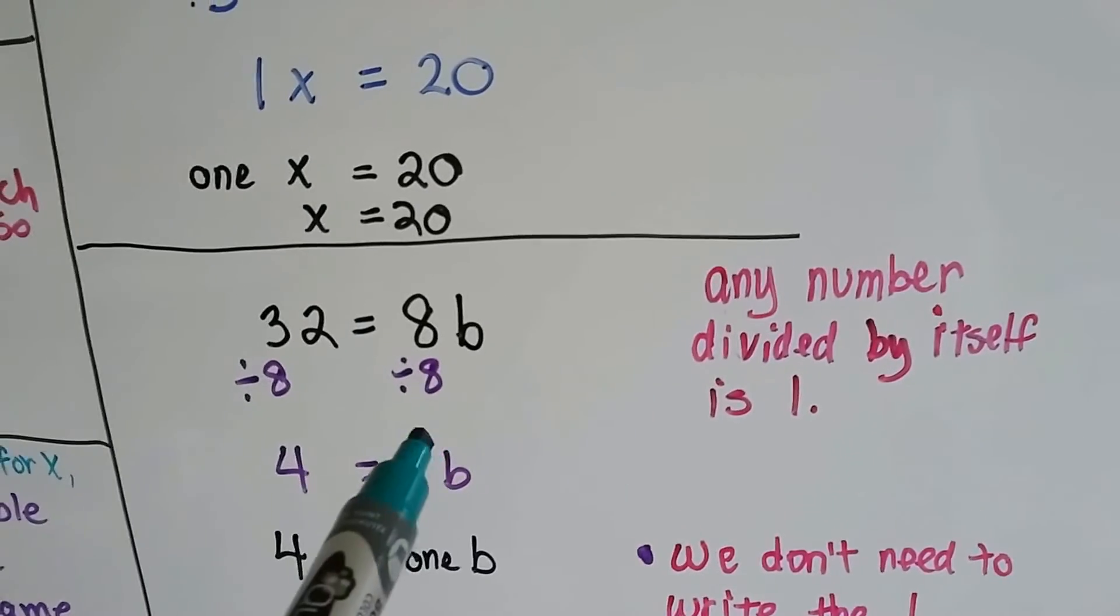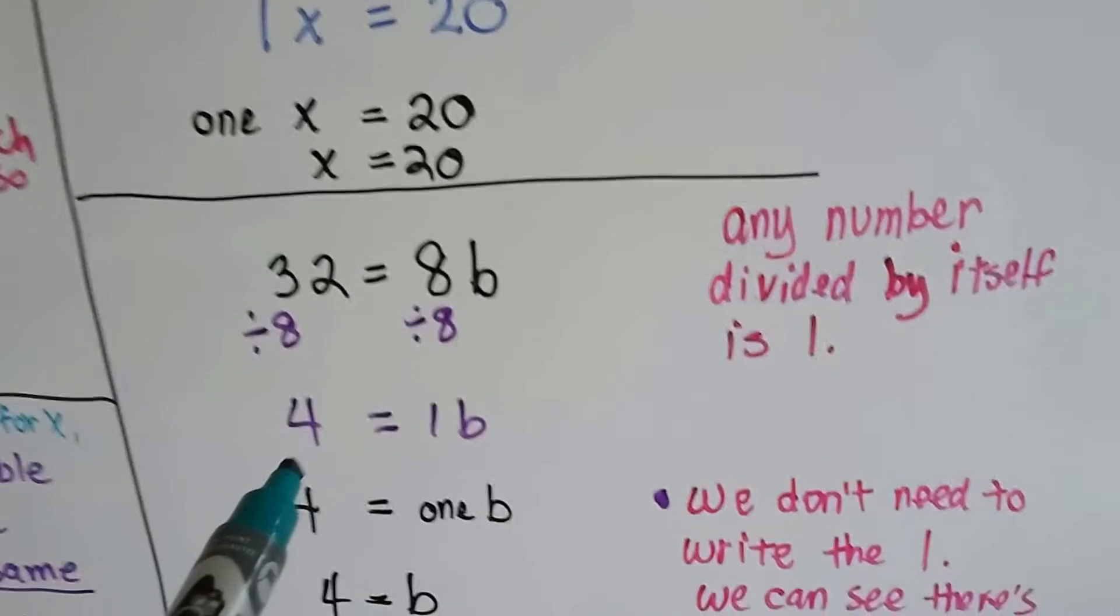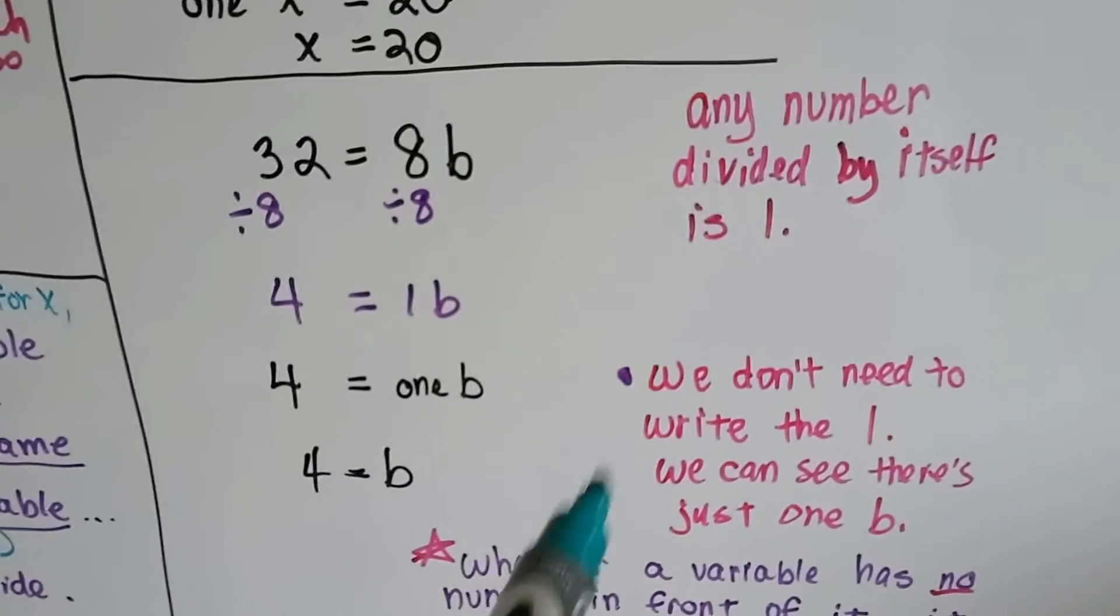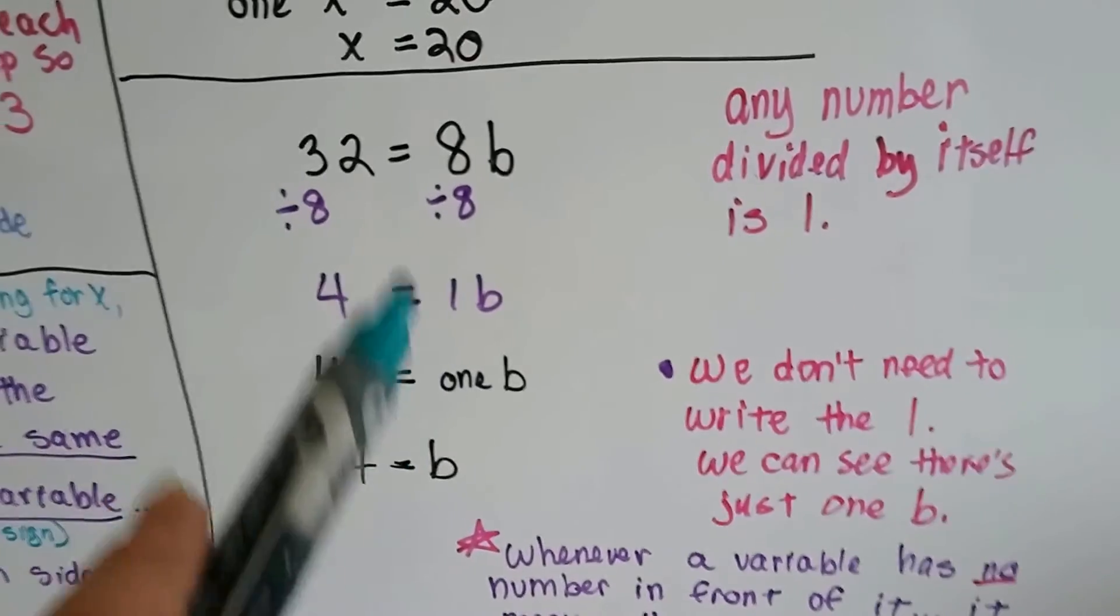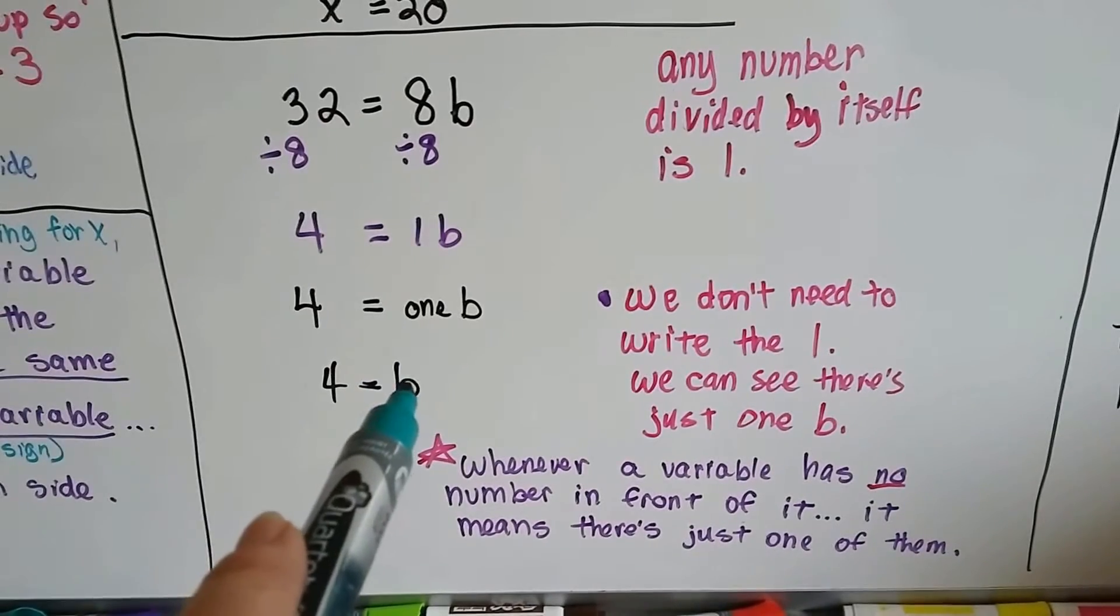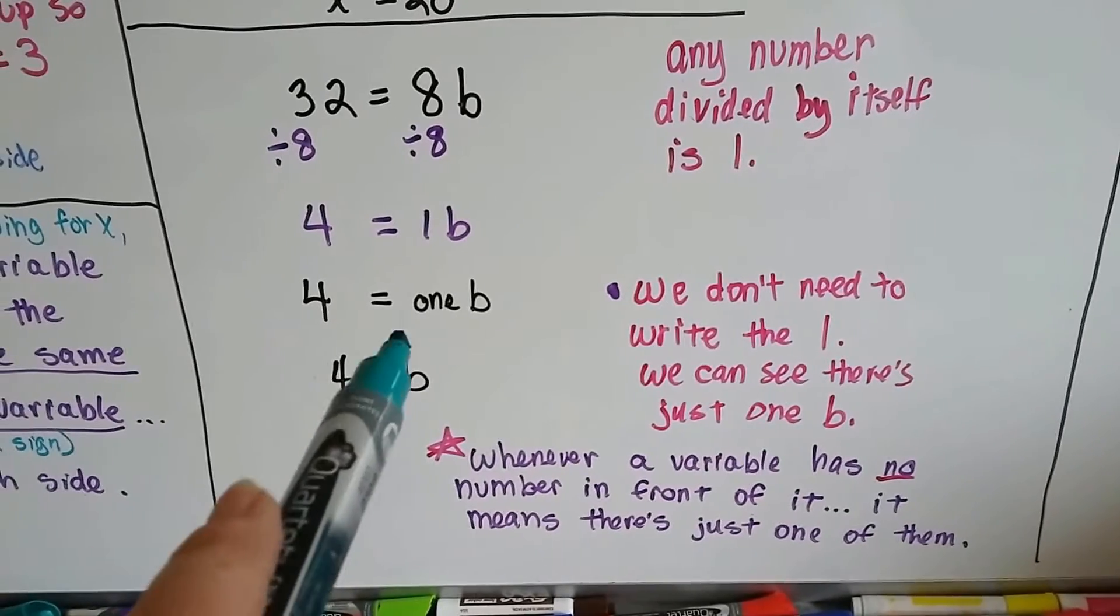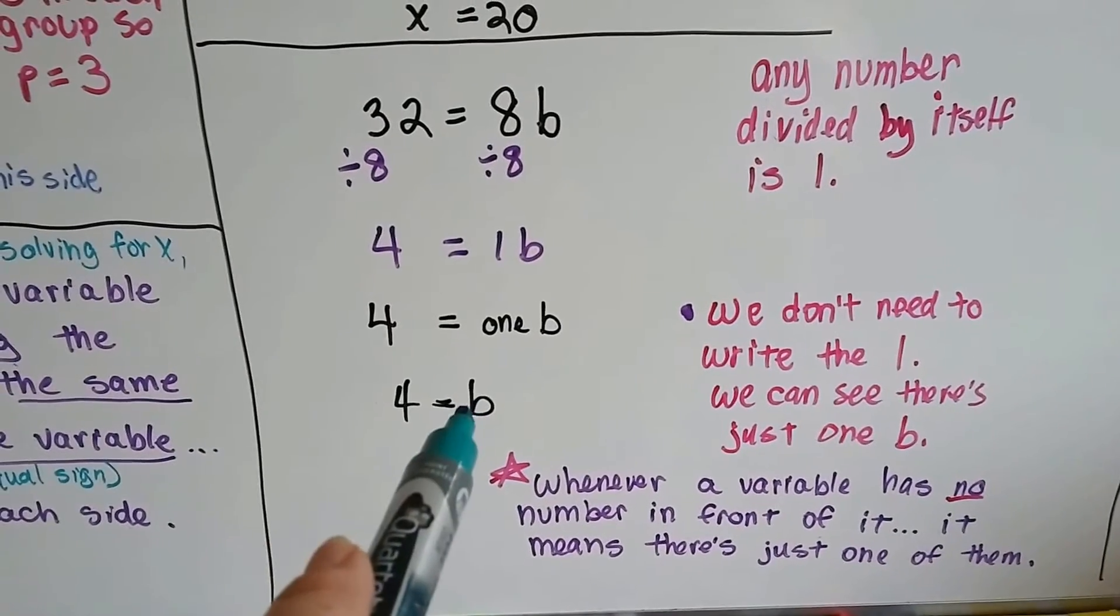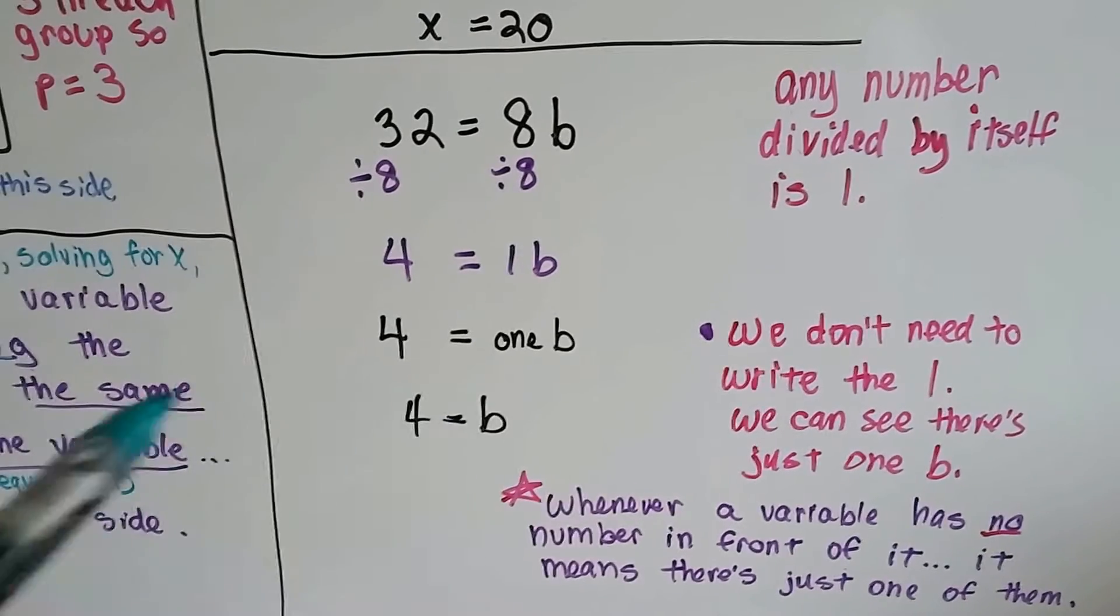Any number divided by itself is going to be 1. 8 divided by 8 is 1. 32 divided by 8 is 4. Then we get 4 is equal to the 1b. But we don't need to write the 1. We can see there's just 1b. If there's 2, yeah, write it. 3, 4, 5, or more. But when there's just 1, you just write the b, because we just know that it's 1 and it's by itself. So whenever you see a variable by itself with no number in front of it, we assume that it's got a 1 in front of it. If you saw 4 times b, that means 4 times 1. It would be 4b.